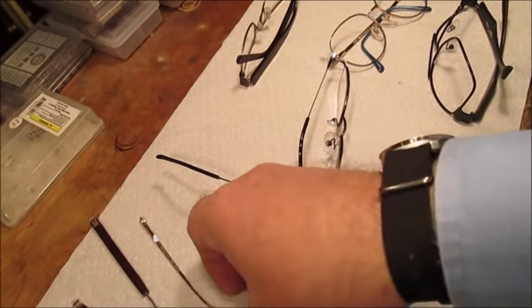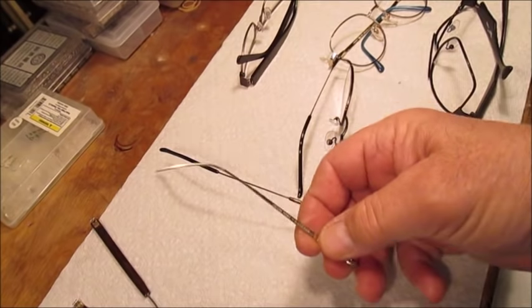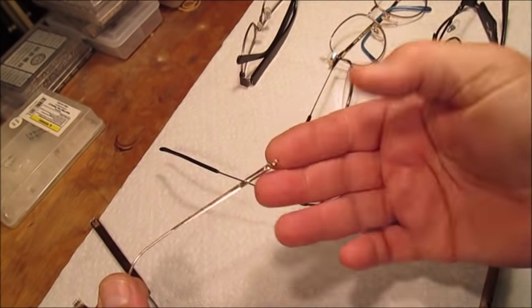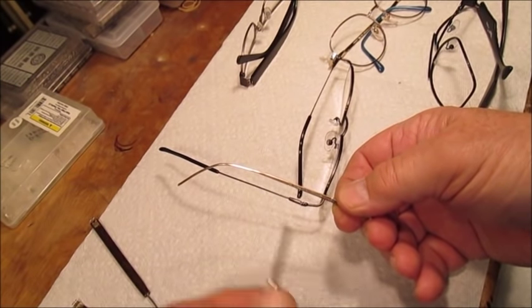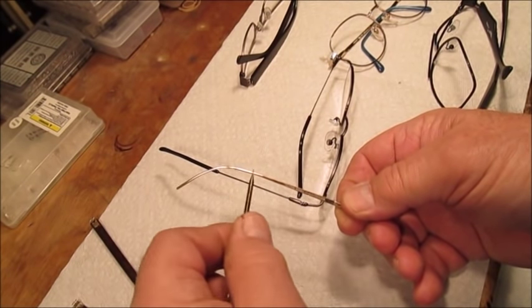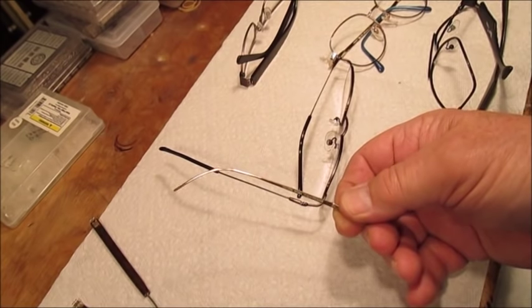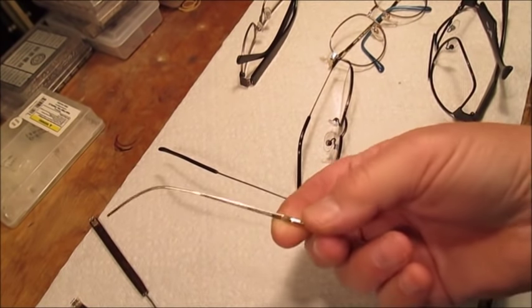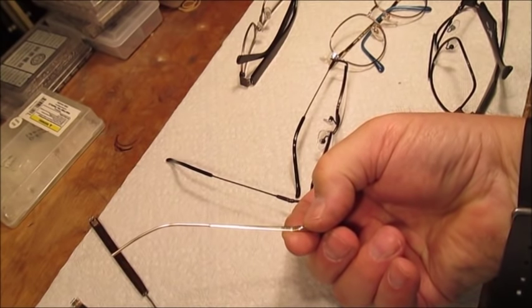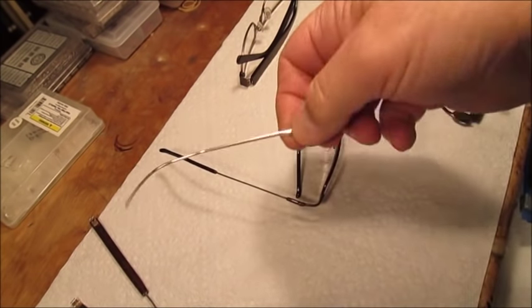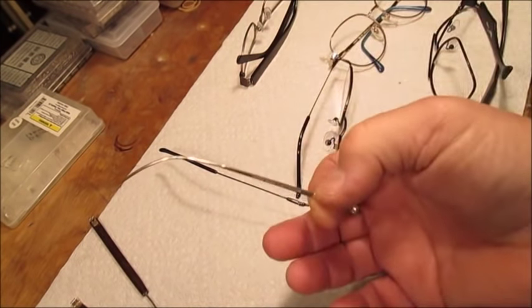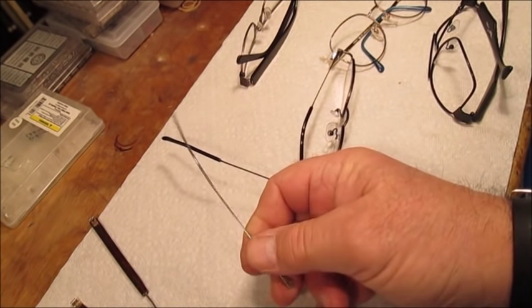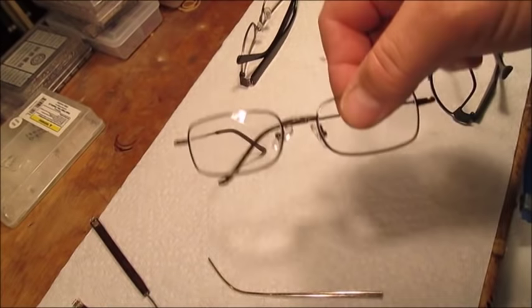Then we have the actual temple arm itself which extends back from the attachment point, goes back over the ear, and has to be welded at one of the points at which it tends to break. Again, sometimes this is the result of adjustment, sometimes it is the result of just common everyday wear. But in all cases as long as you have most of the piece remaining we can in fact replace it or repair it and return the frame itself to service.